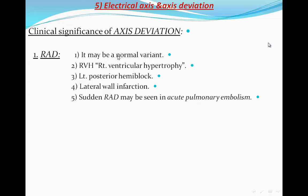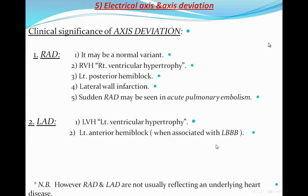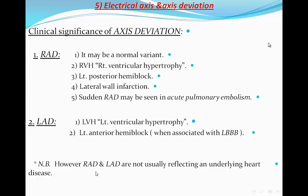Clinical significance of axis deviation: Right axis deviation may be a normal variant, or caused by right ventricular hypertrophy (RVH), left posterior hemi-block, lateral wall infarction, or acute pulmonary embolism (sudden right axis deviation). Left axis deviation occurs in left ventricular hypertrophy (LVH), left anterior hemi-block, and when associated with left bundle branch block. However, right and left axis deviation do not usually reflect underlying heart disease on their own.